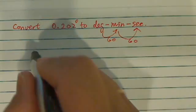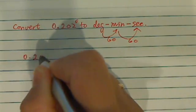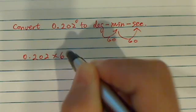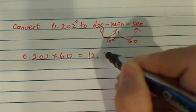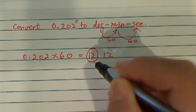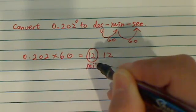So let's start at 0.202 times 60. On my calculator, 0.202 times 60, I have 12.12. So this becomes my next unit, which is the minute.